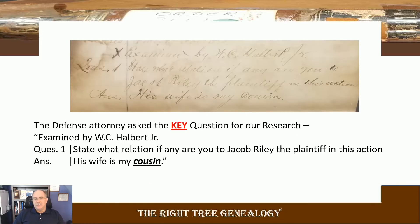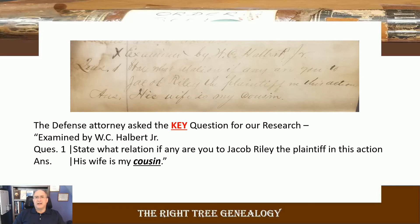Here's the biggest thing. The defense attorney did a cross-examination of William Sarton. The key question, asked by W.C. Halbert Jr., was: 'State what relation, if any, are you to Jacob Riley, the plaintiff in this action?' The answer: 'His wife is my cousin.' That was huge. Back then, when someone said 'cousin' without qualification, it generally referenced a first cousin. If it were more distant, they would say second cousin, third cousin, or just 'a relative.' That's a key piece of information on this document.